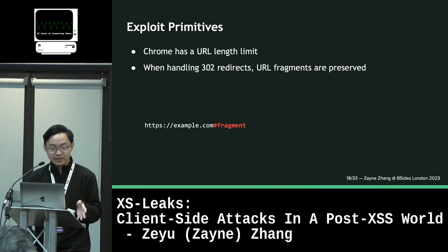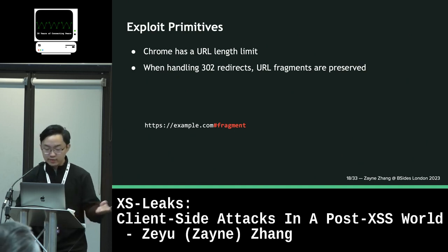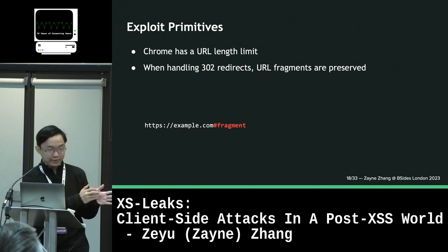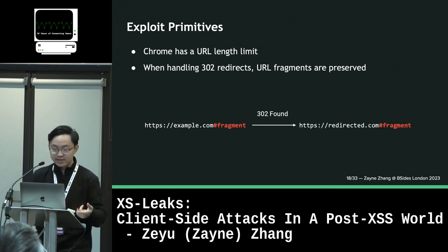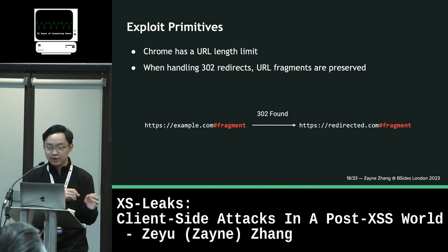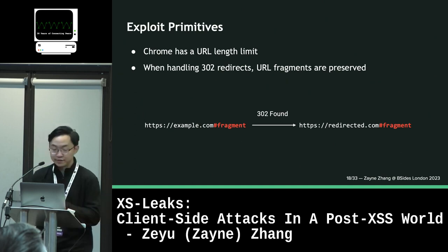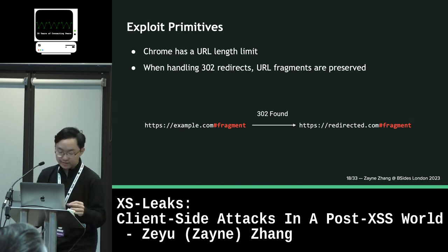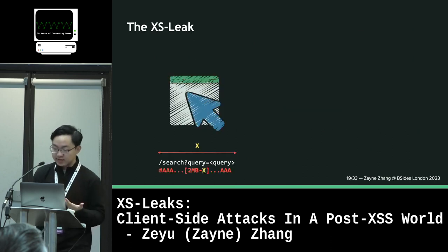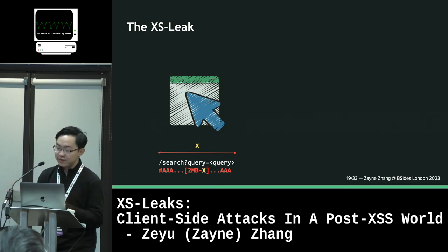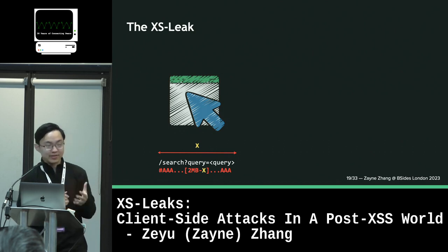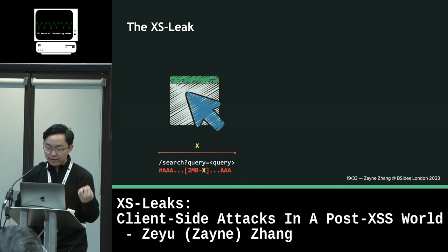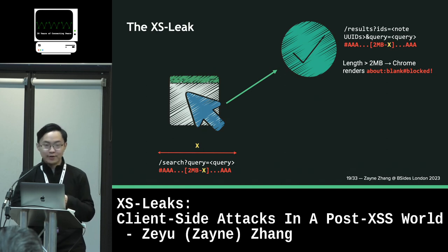Chrome has a URL length limit, and at the same time, when handling server-side redirects, URL fragments are preserved. Looking at the red part of a URL — that's a URL fragment — when example.com redirects to a different website, the browser keeps the URL fragment in the address bar. That part of the URL is preserved even though the redirect didn't explicitly say it wants to redirect to this fragment; it sort of preserves the state in the browser URL. The idea is that we could construct a URL with a long fragment that keeps the URL just under the 2MB length limit. You calculate how many characters you need in the fragment to keep it just under 2MB, and if a redirect causes the URL length to increase, then the total length now exceeds 2MB.